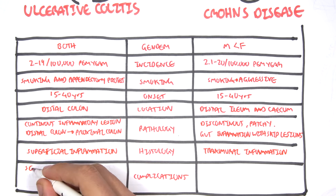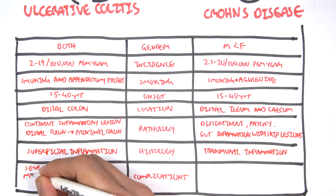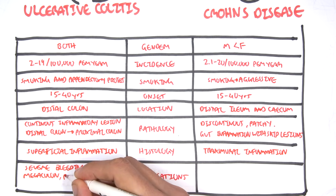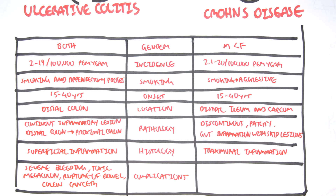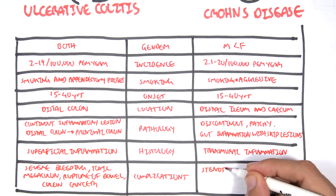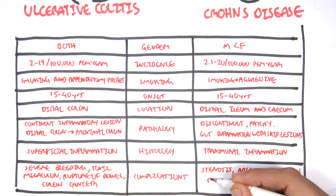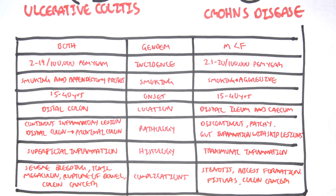Complications of ulcerative colitis include severe bleeding, toxic megacolon, rupture of the bowel, and colon cancer. For Crohn's disease, complications are more severe because the transmural inflammation affects all layers of the GIT. Therefore, complications include stenosis, abscess formation, fistula, colon cancer, and perforation.